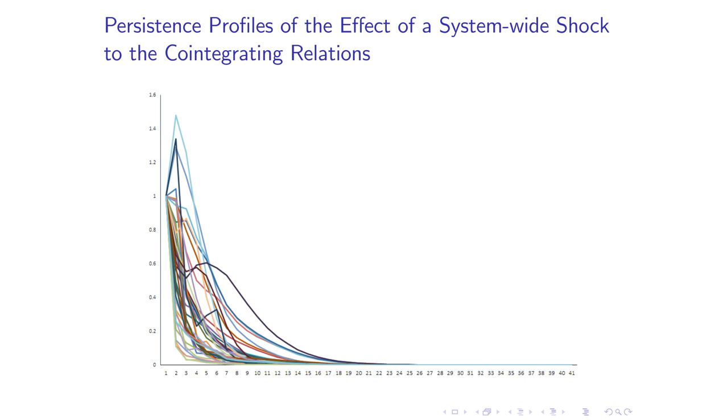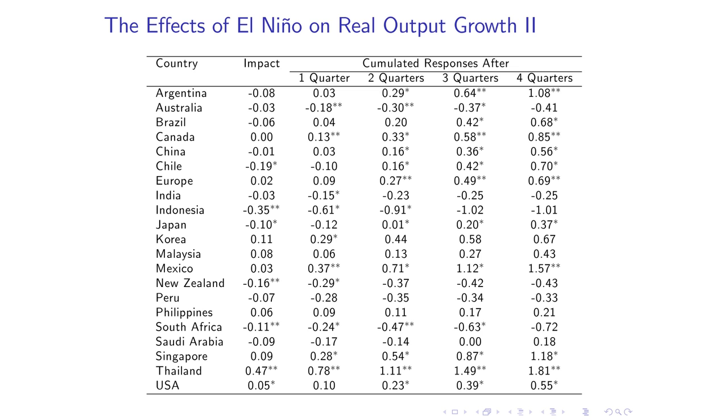Now the important part: what would happen if there was an El Niño shock? We shock the model and ask what would happen to the global economy. Starting with Australia — where the two stars and one star denote significance levels — we notice that GDP falls. This is not surprising because Australia already has dry weather, and El Niño makes it even drier. You get droughts, severe impacts on wheat, increased bushfire frequency and severity. Wheat exports fall dramatically and global wheat prices go up.